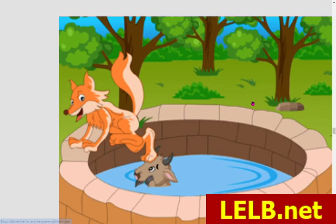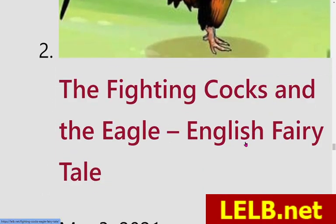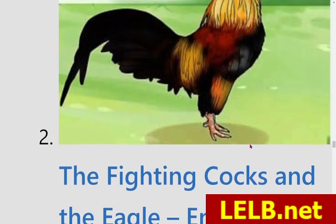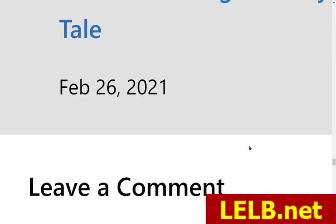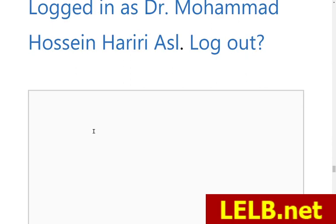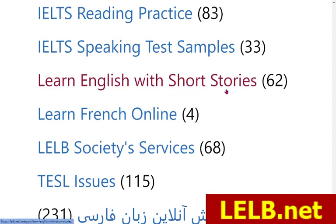Some related lessons include: the story of the fox and the goat, the story of the fighting cocks and the eagle, and the story of Mercury and the workmen. You can leave your questions in the comment form if you have any questions or opinions, and you can expect to receive feedback. There are over 62 short stories in the 'Learn English with Short Stories' category.